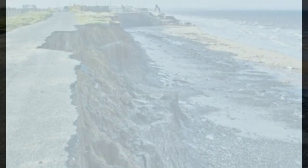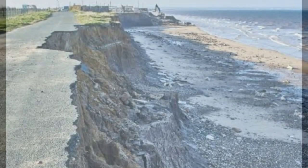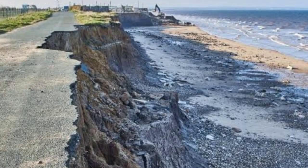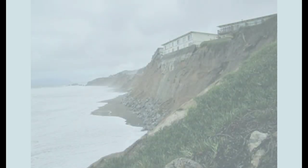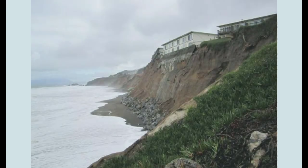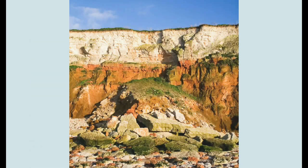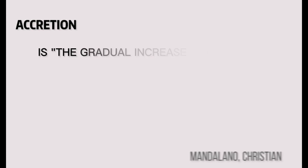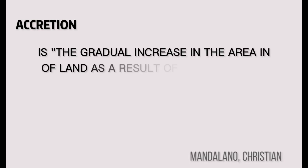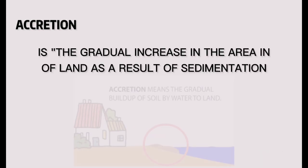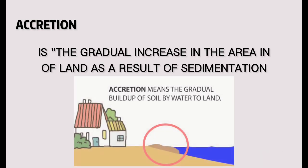These are pictures of erosion — the wearing away of land or the shoreline. Accretion is the gradual increase in the area of land as a result of sedimentation.